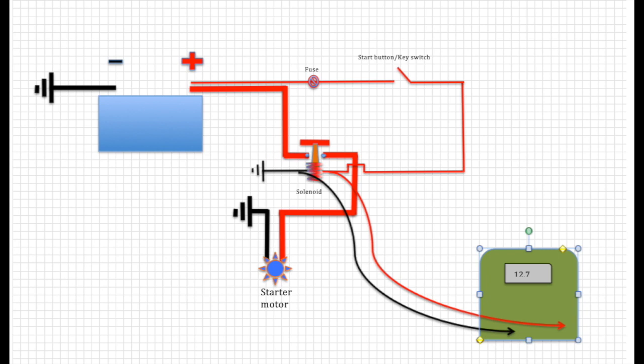Simply changing your positive detection lead from your meter from one side of the solenoid positive to the other side, will also tell you if the current is getting through when the start button or key switch circuit is closed. Does that make sense?